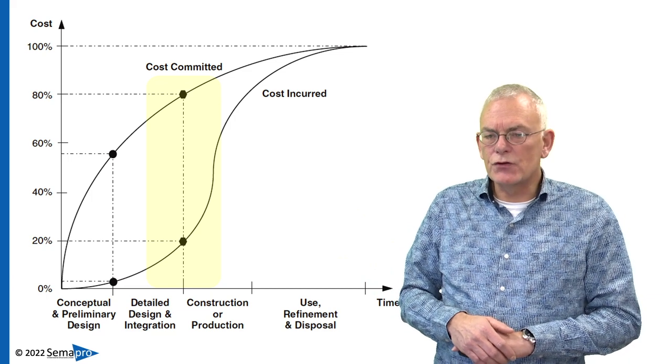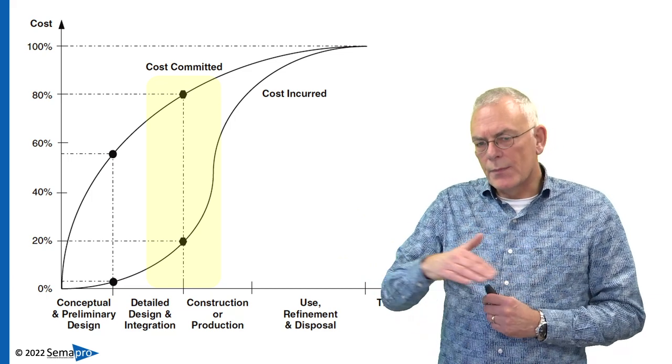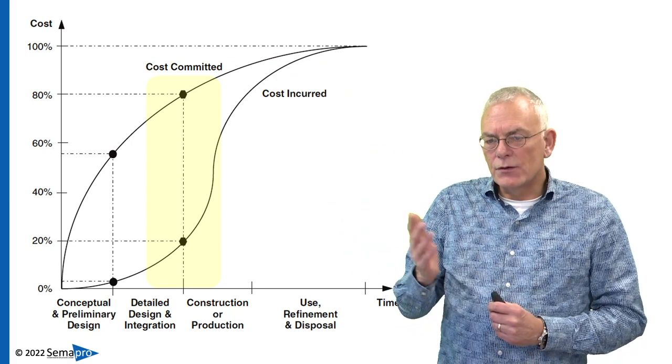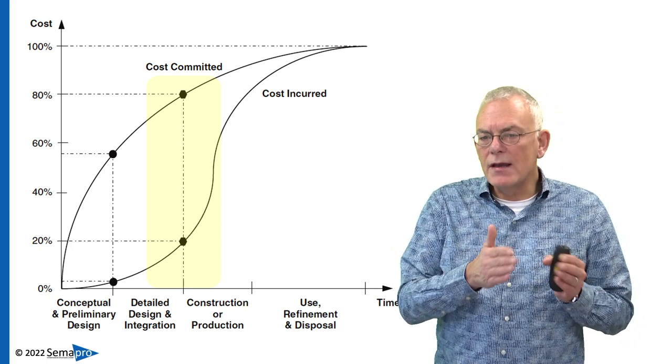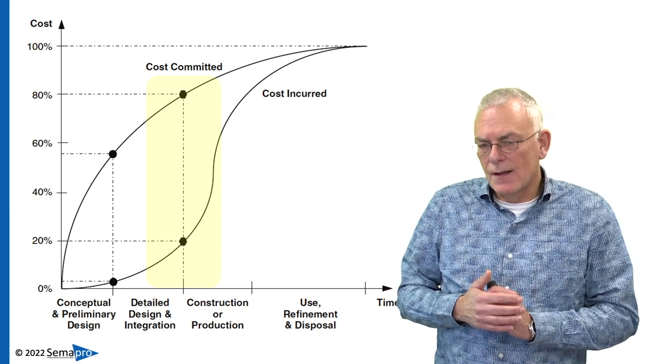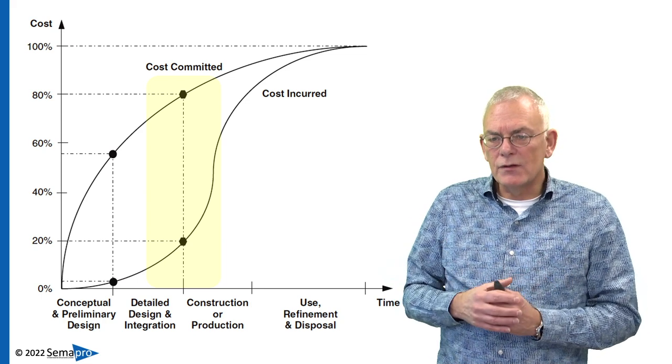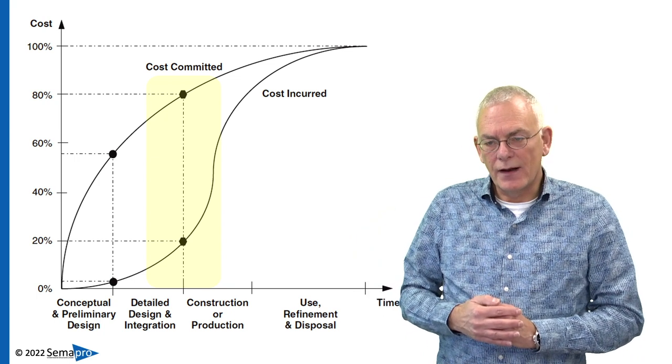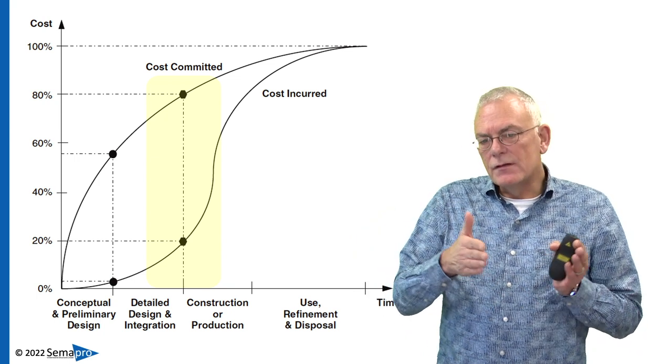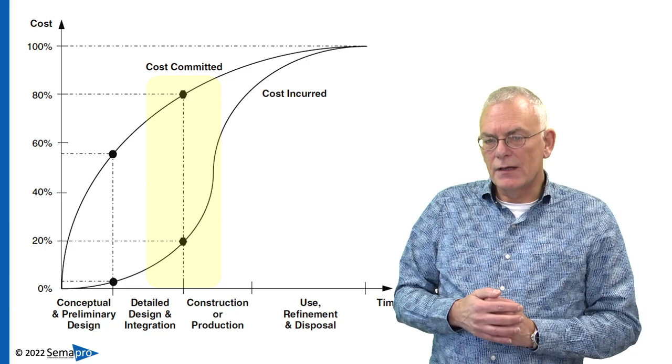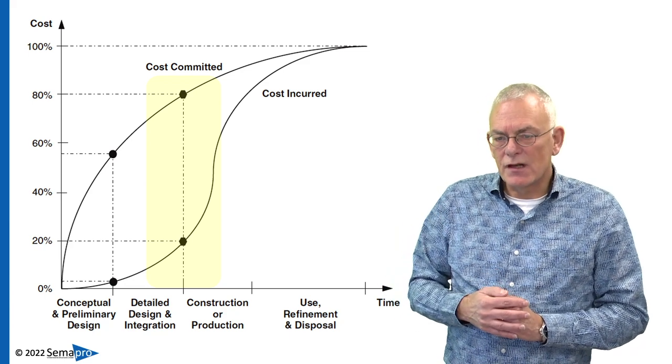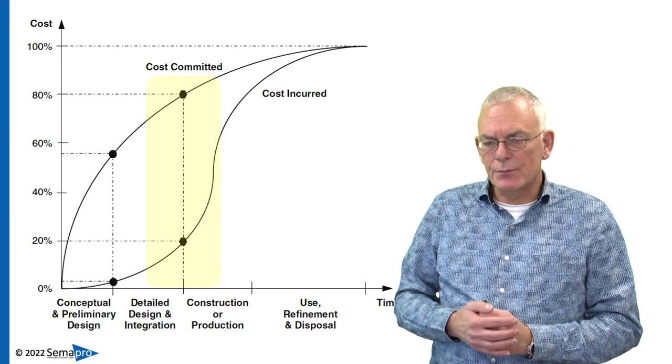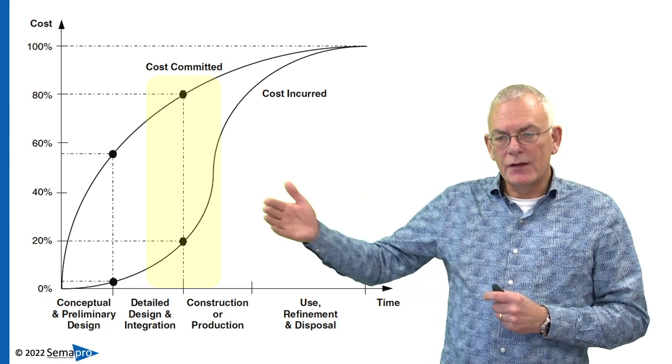Now, this graph here shows you the relationship between what costs are being made in the project. This is cost incurred, and the cost committed. And what we mean with cost committed is that if you make a design, it's probably also what you're going to make in production. That means that your design already defines the outline of the product, so that also the cost of this product is being defined. And after you have designed your system, about 20% of the costs have been incurred, but 80% of the costs have been committed. So, any defect that you can solve in the first 20% of your project will not propagate to the end.